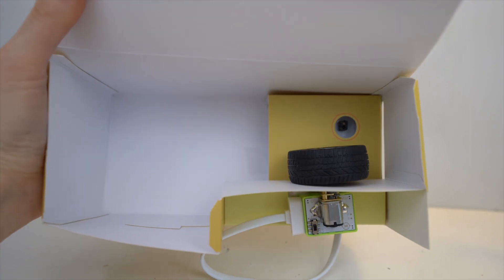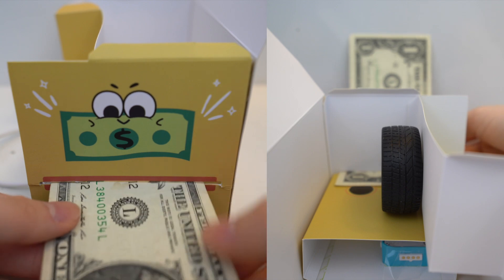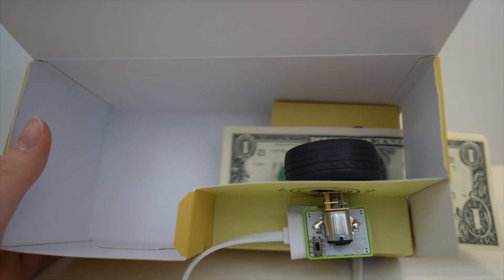A cool thing about this template is that it comes with a magnetic strip so that the module can stick and not fall off. Here's a demonstration of how the money box works. When the IR reflective sensor is covered it turns the motor.